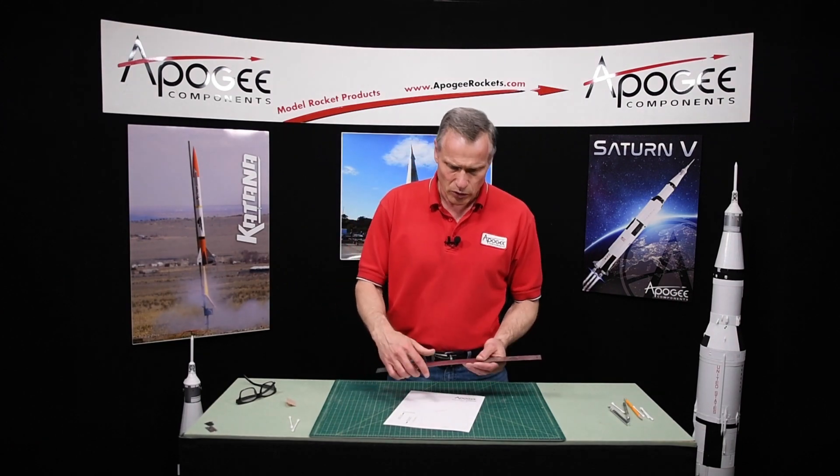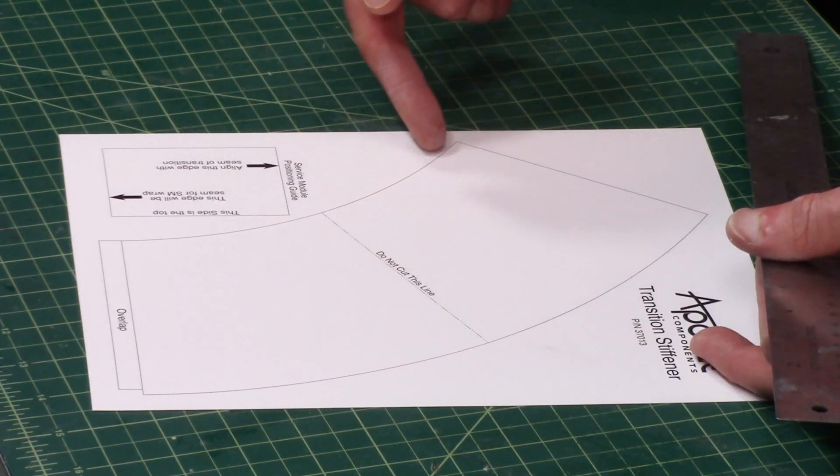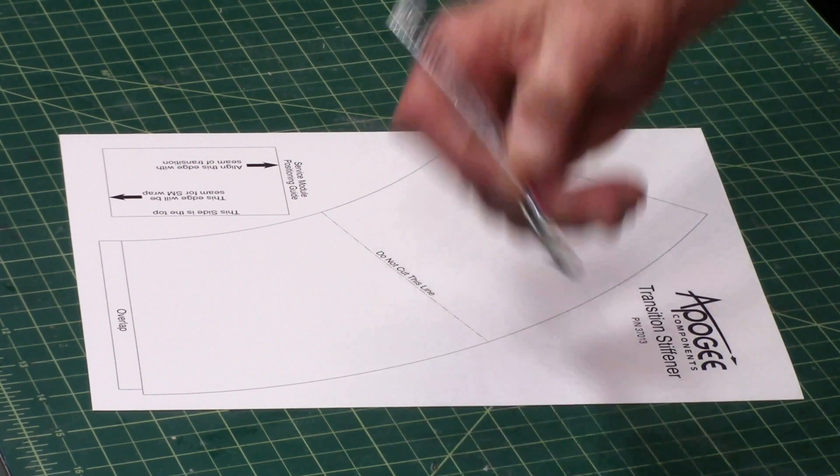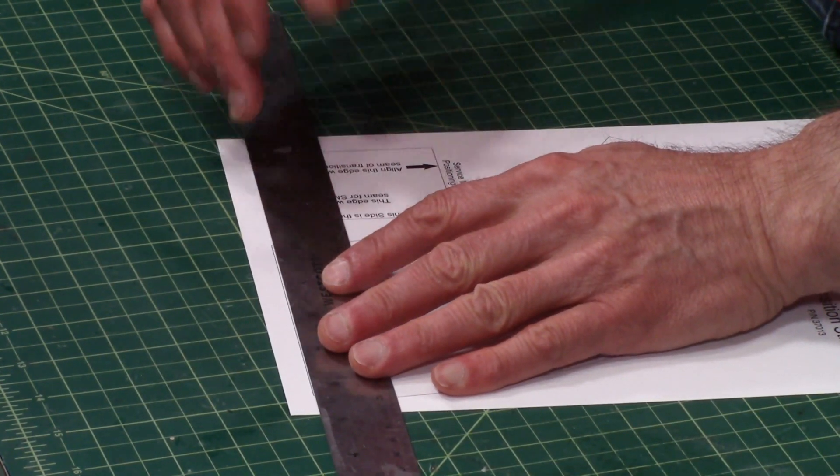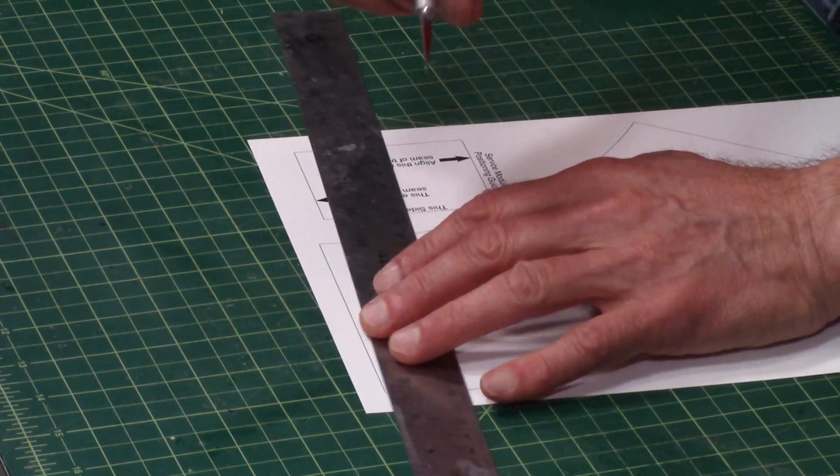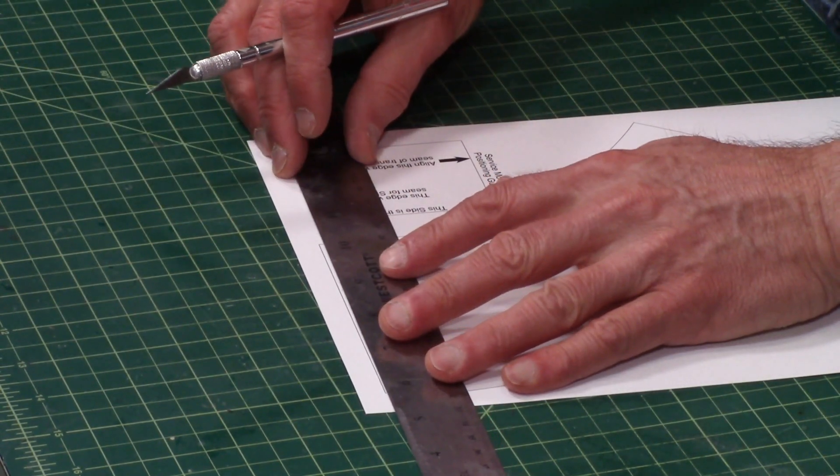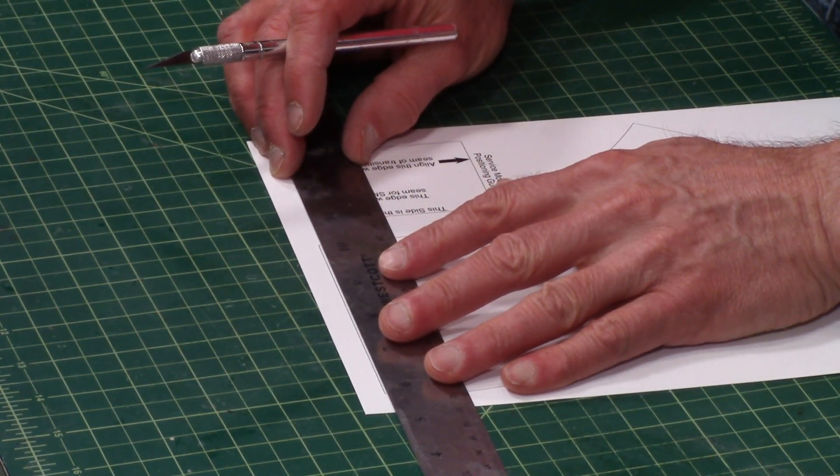We're going to cut this out with a ruler, and for these curved edges, we're just going to freehand it. So I start with the straight edges first, and I always put the ruler on top of it, so that if my knife strays away, it doesn't go into the part.